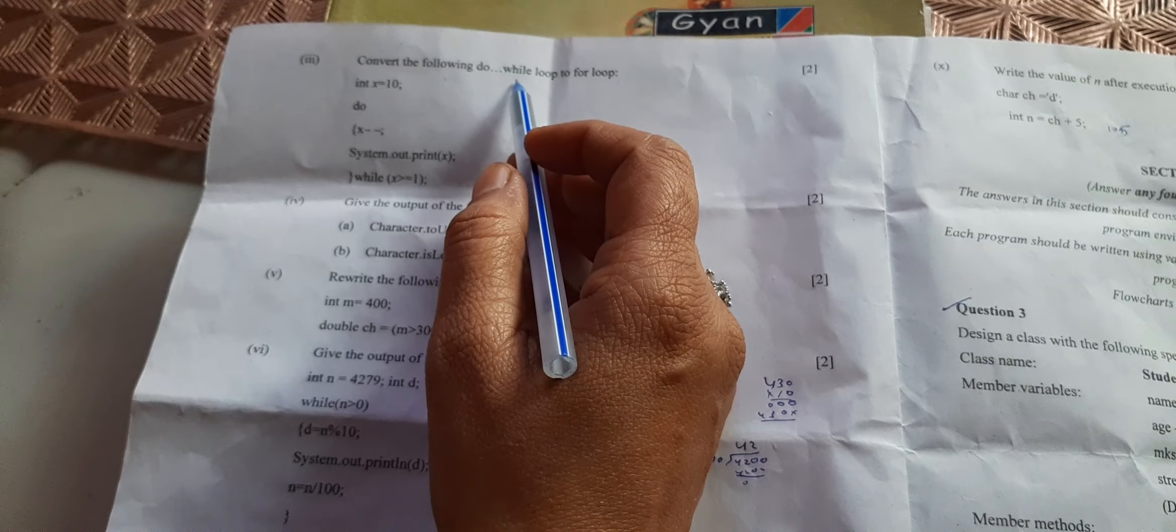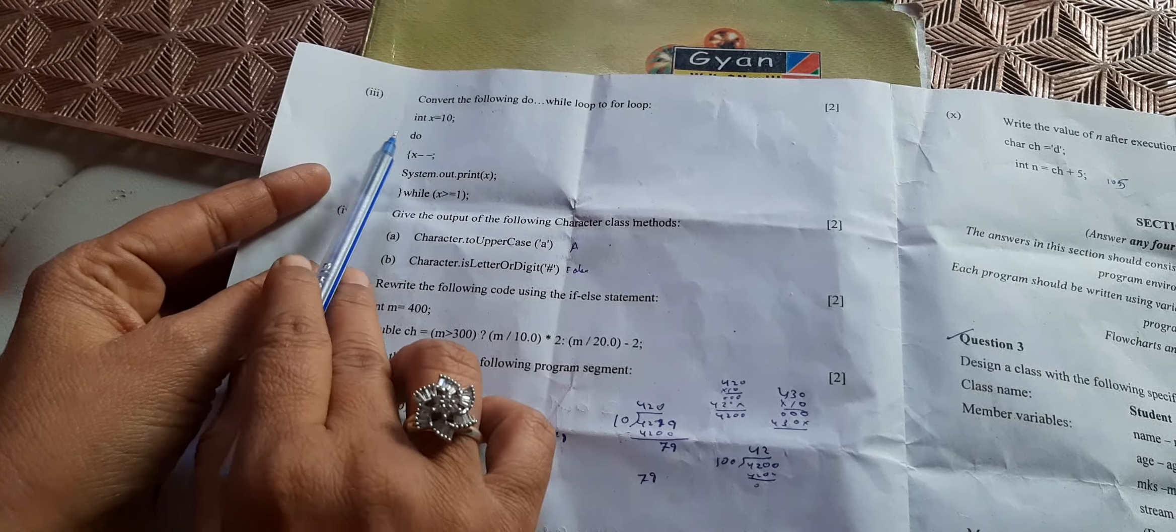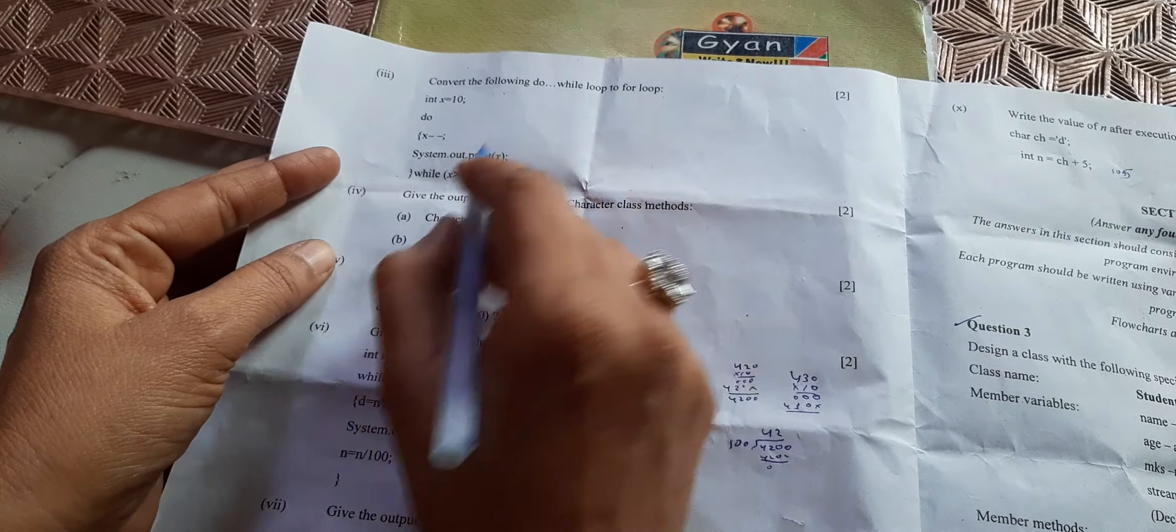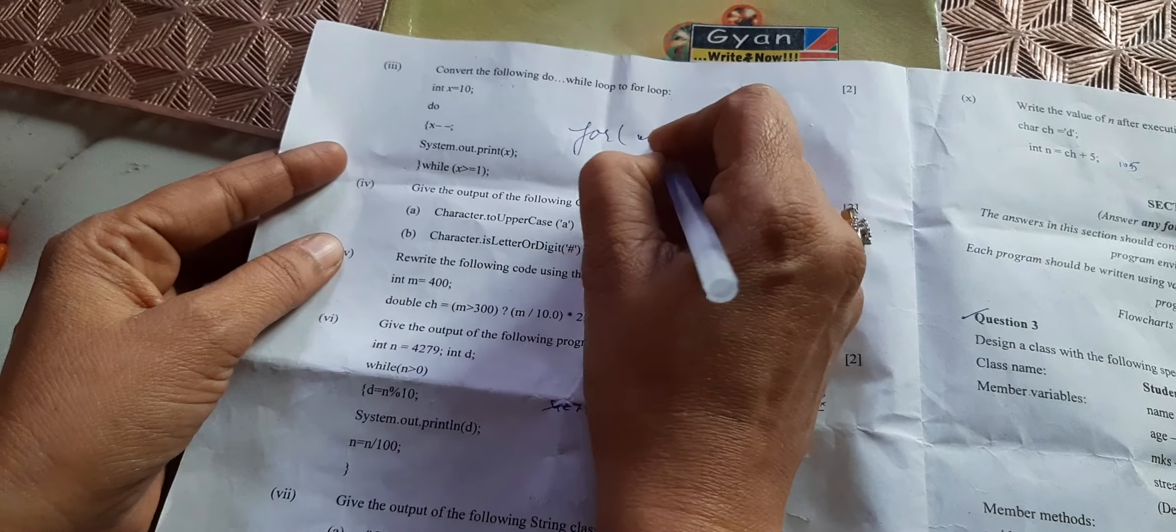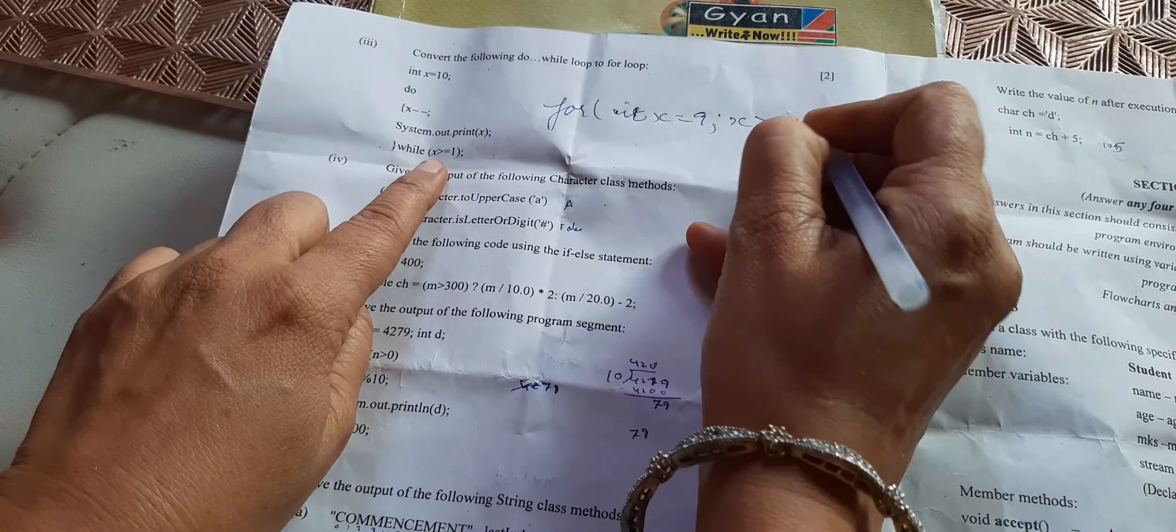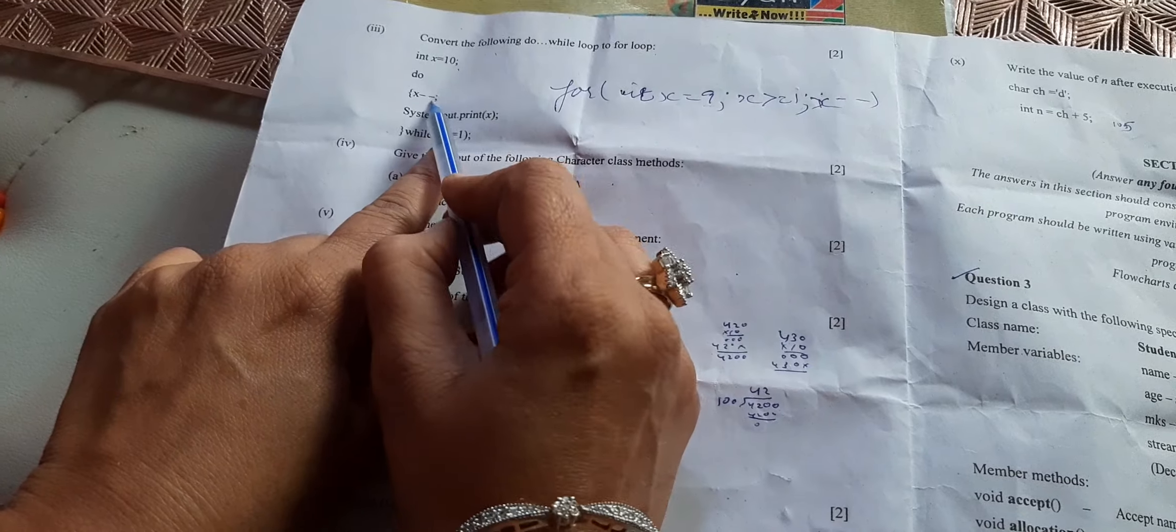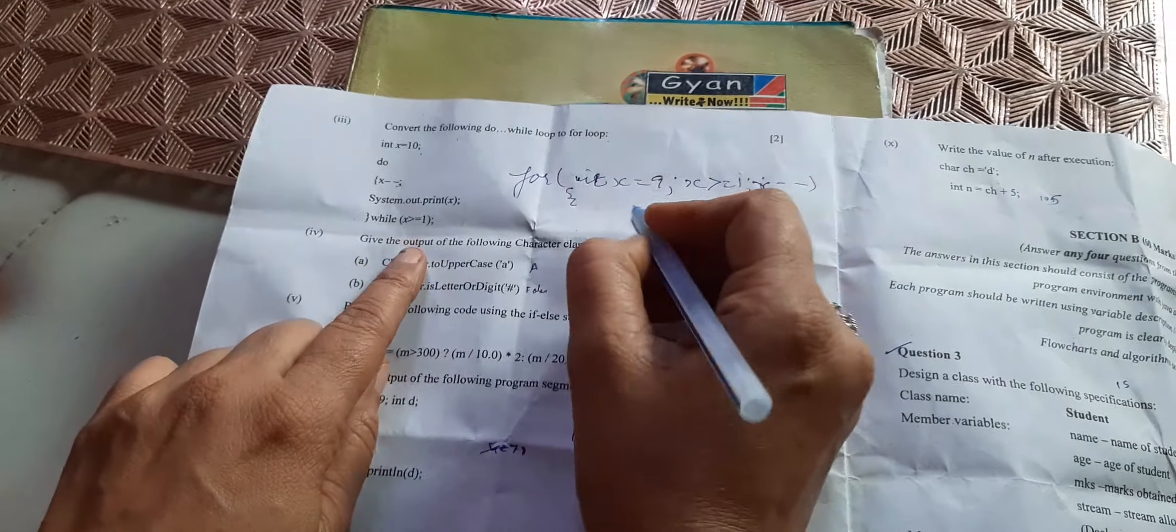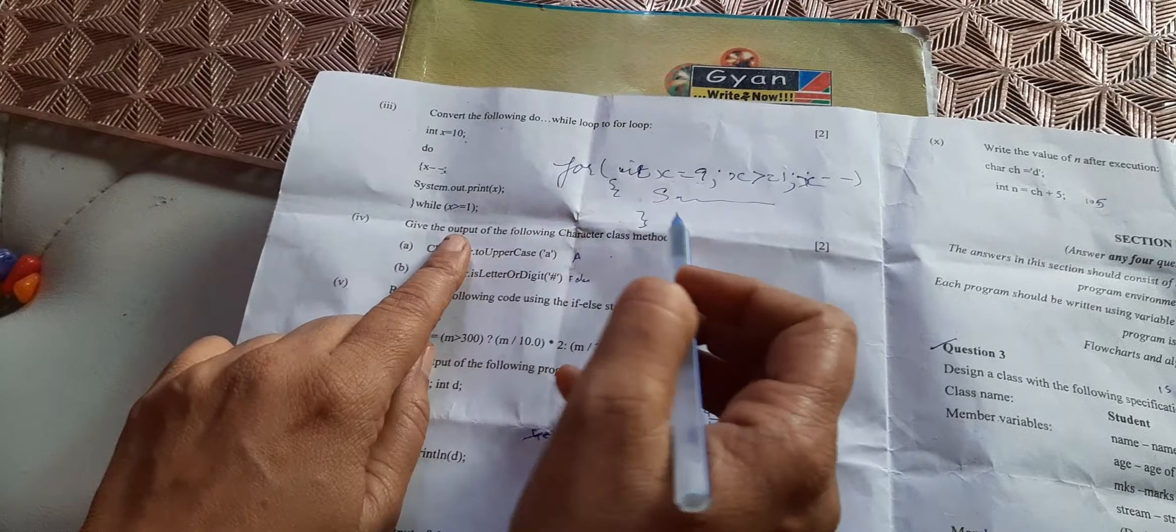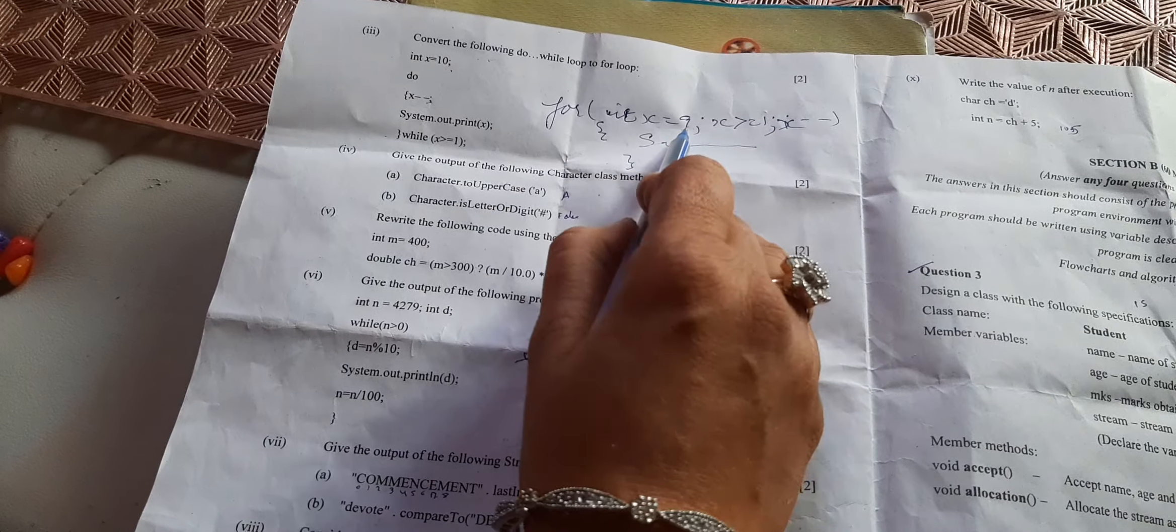Convert the following - these questions come every time. They have given int x equals 10, but this is a do-while loop. They have decreased the value of x from 10 to 9. We have to convert it into for loop. So it will be: for(int x=9; x>=1; x--). It will start from 9 because here it is 10 but they have done decrement. Then open curly brackets, system.out.println, write the whole thing, and close curly brackets. This is conversion of do-while loop into for loop. Board may give answer if they have not checked properly, but x value will start from 9.